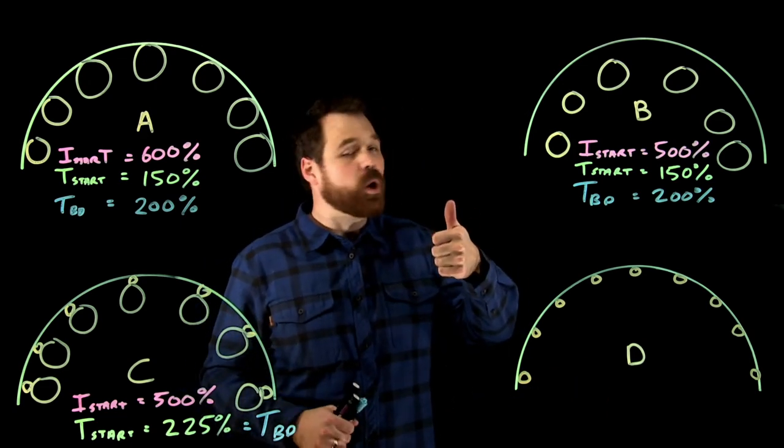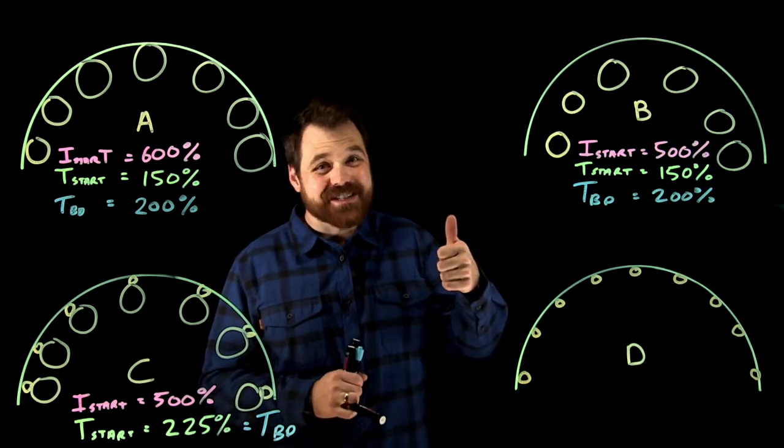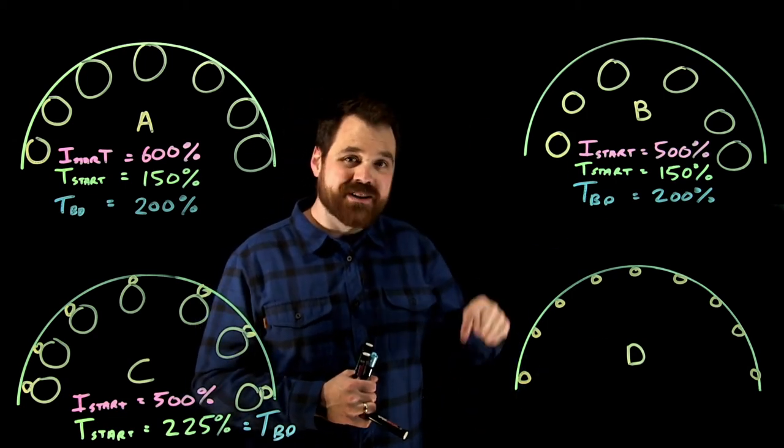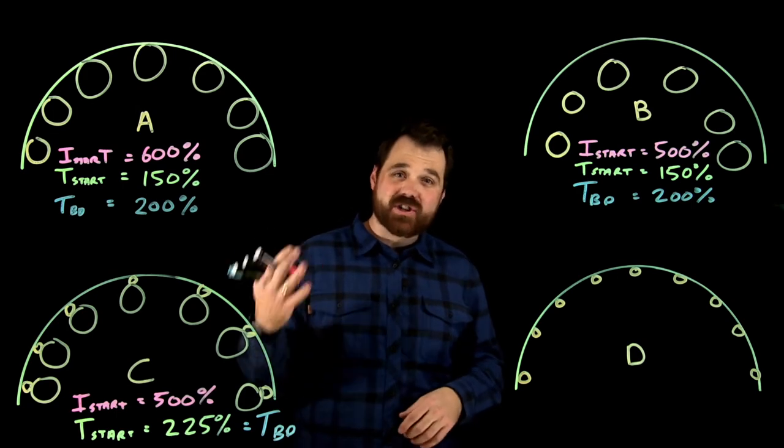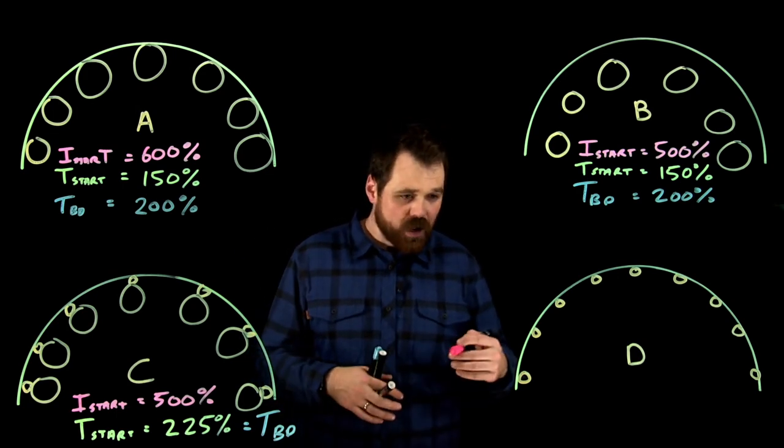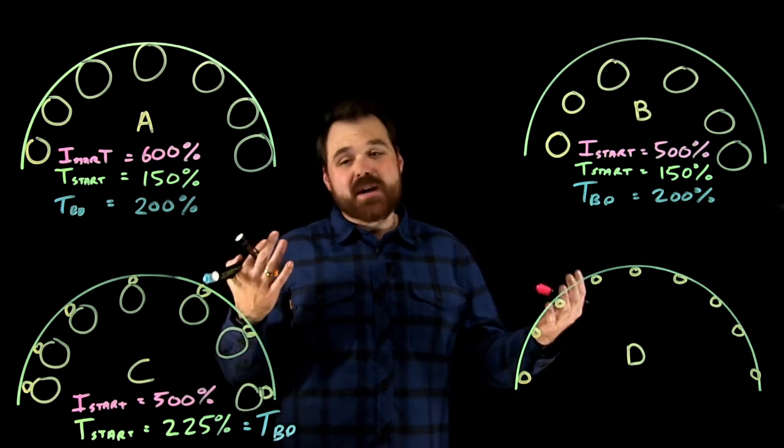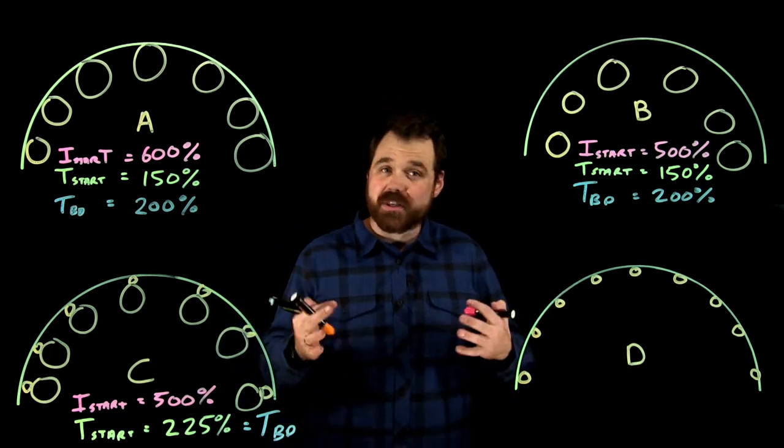So with the small rotor bars placed close to the surface, we see a high resistance and a low inductance. So what that gives us is that gives us a really, really high starting torque. But it's going to give us that really poor efficiency. So with this motor, again, we have that really high starting torque.